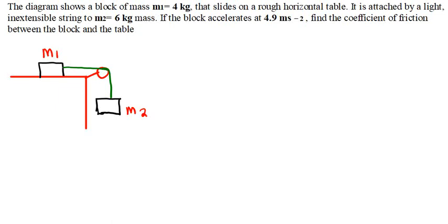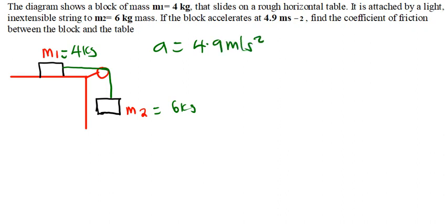Let's talk about this question which is under pulley system, Newton's laws of motion. The diagram shows a block M1 equal to 4 kg resting on a rough horizontal table. It is attached by a light and inextensible string to M2 equal to 6 kg. If the block accelerates at 4.9 meters per second squared, find the coefficient of friction between the block and the table.